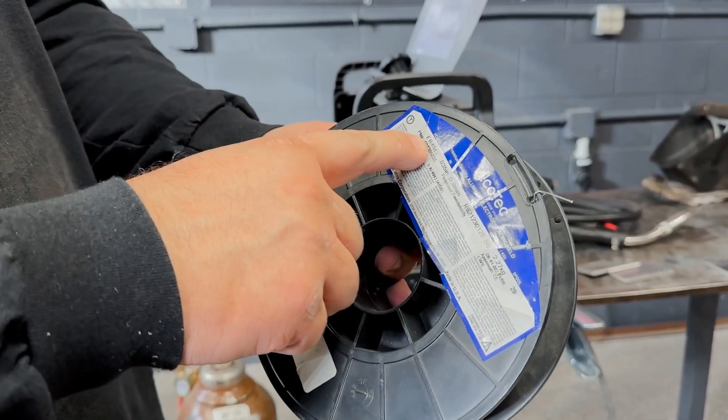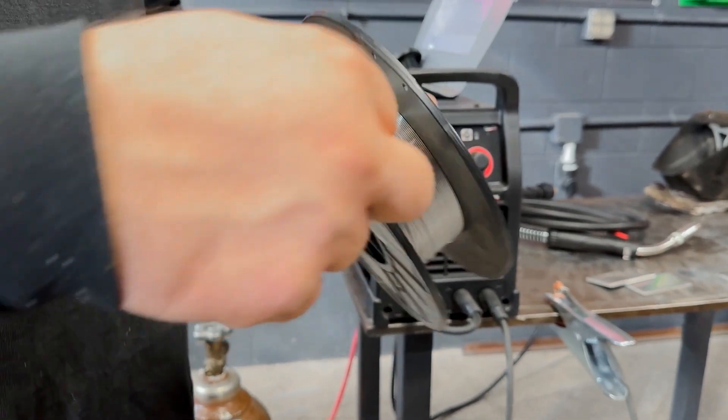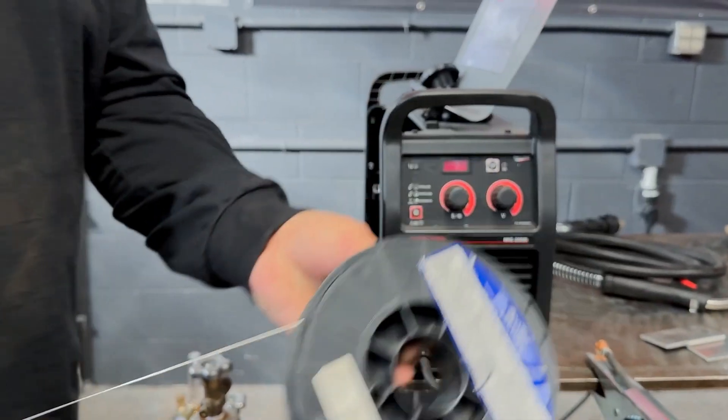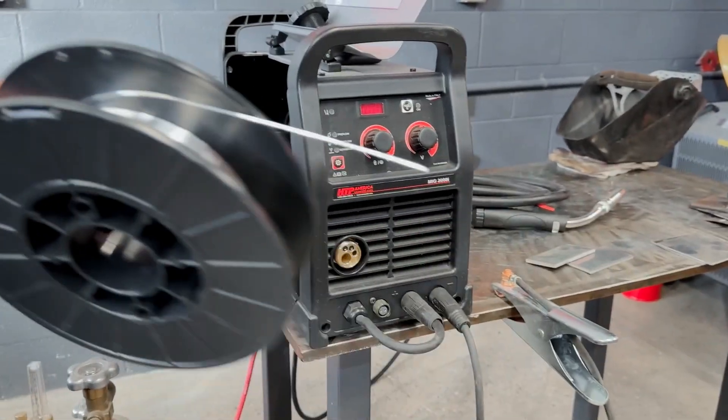Get your aluminum wire. In this case, we opted for 4043 and 035 diameter. You could have picked other alloys or other diameters as well. Straighten the end of your wire out so it feeds better.